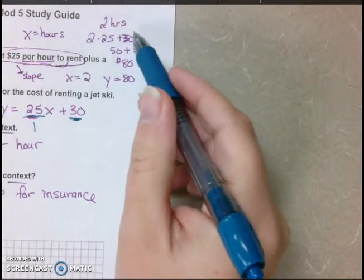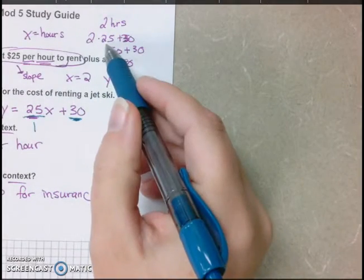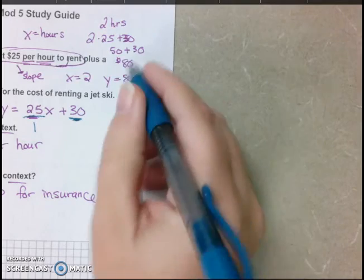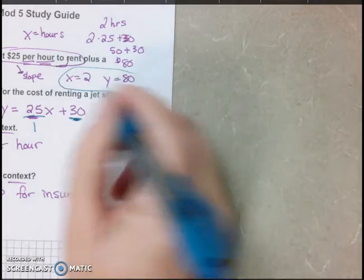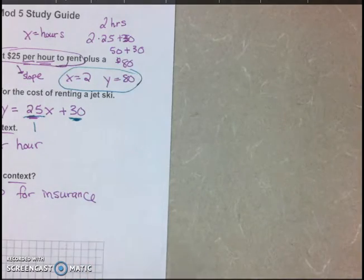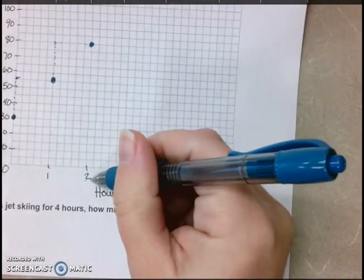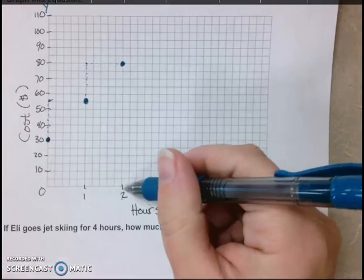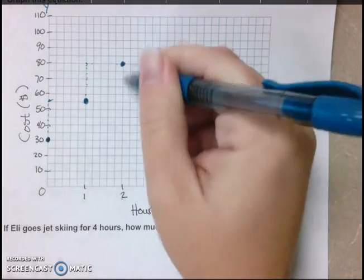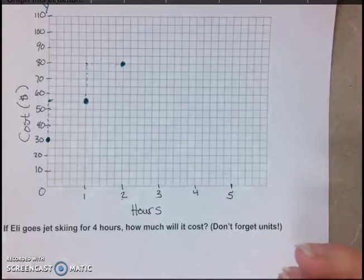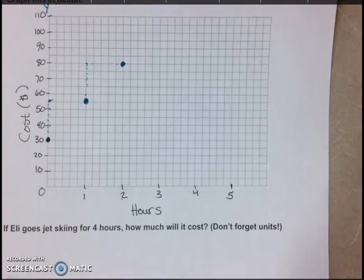So remember earlier I said, if it's 2 hours, you pay $25 twice to get 50 plus the $30. So I said, after 2 hours, it's going to cost $80. So when x is 2, y is 80. So your graph should show that. So look at this, after 2 hours here, I have, when x is 2 hours, y is 80, $80.